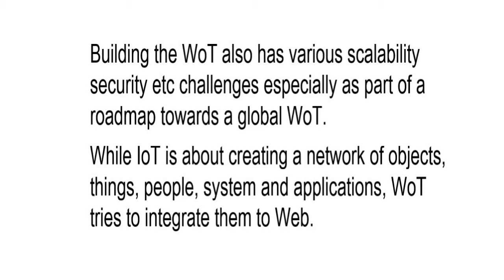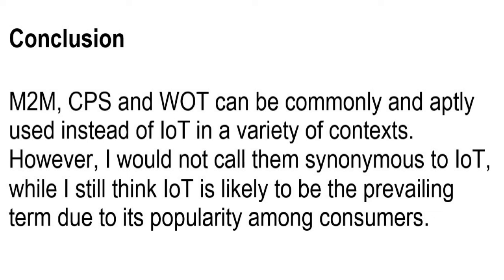Standards organizations work together to come up with agreed-upon standards. While IoT is about creating a network of objects, things, people, systems, and applications, WoT tries to integrate them into the web. Terms such as M2M (machine-to-machine), CPS, or WoT can aptly be used instead of IoT when talking specifically, but for the most part you will hear people refer to all of those things as the Internet of Things. But now you know the difference. This is Mike Eccles — join me for Lesson 4.